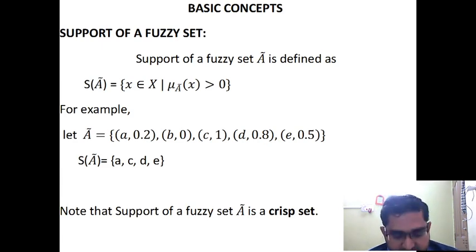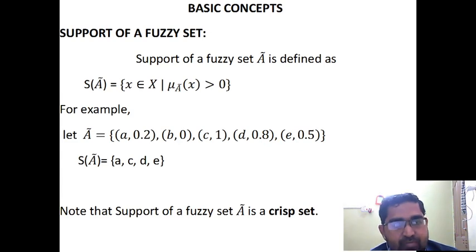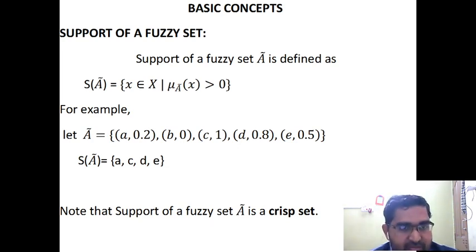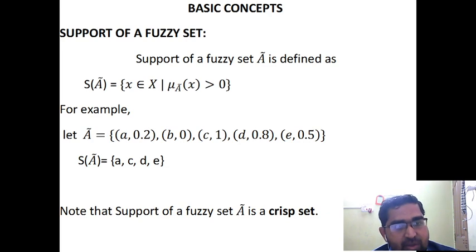Now let us see some basic terminologies of Fuzzy Set. First: the support of a Fuzzy Set. What is the support of a Fuzzy Set? It is defined as the set of all elements x belonging to X such that μ_A(x) is greater than 0 — that means, the membership value is greater than 0.